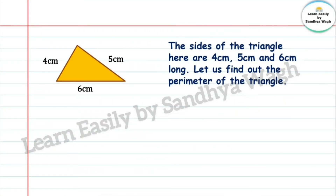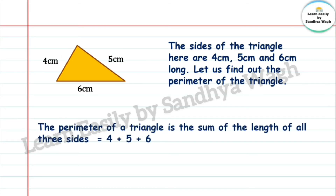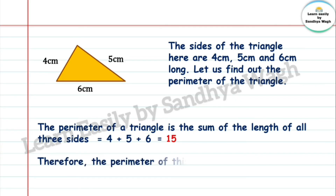The sides of the triangle here are 4 centimetres, 5 centimetres, and 6 centimetres long. The perimeter of a triangle is the sum of the length of all three sides. So 4 plus 5 plus 6 is equal to 15. Therefore the perimeter of this triangle is 15 centimetres.